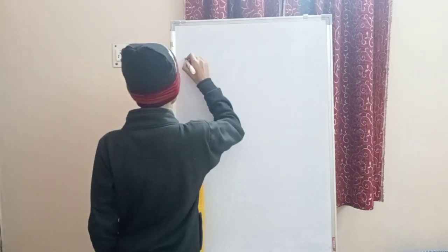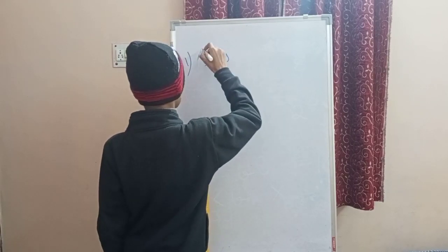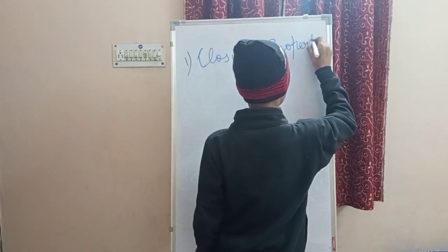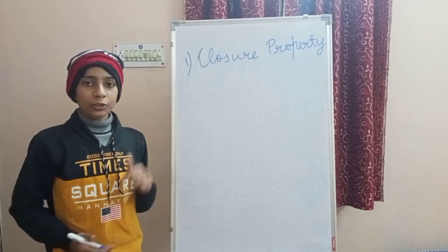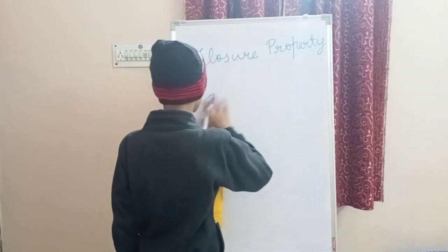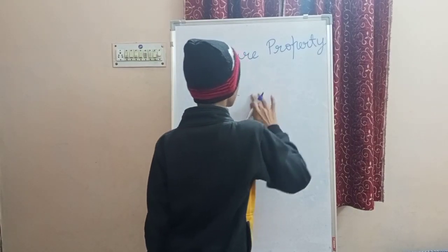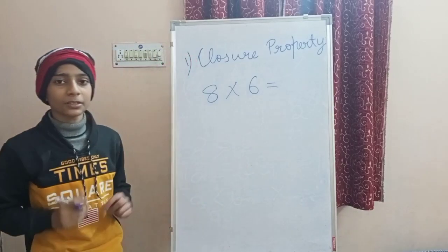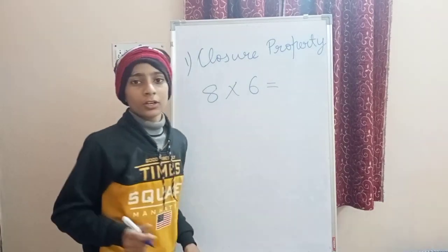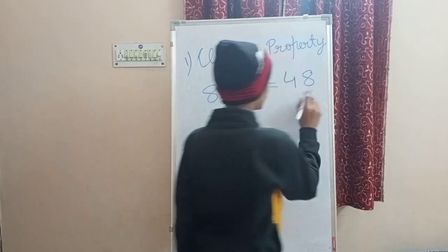Let us start with the first property, which is closure property. Closure property says that when we multiply A into B — for example, taking A as 8 and B as 6 — so 8 into 6 gives us 48. Closure property says that if we are multiplying two whole numbers, the product should also be a whole number.